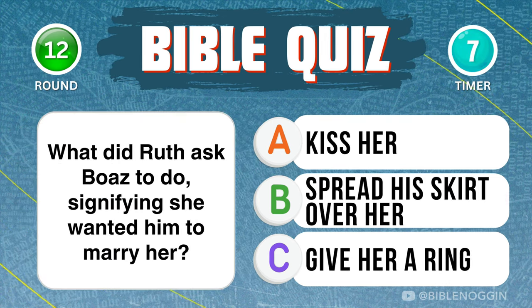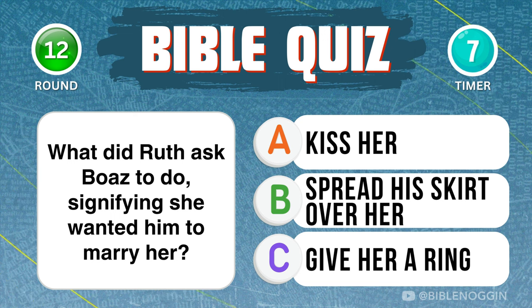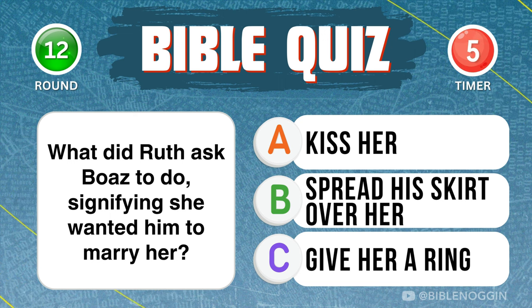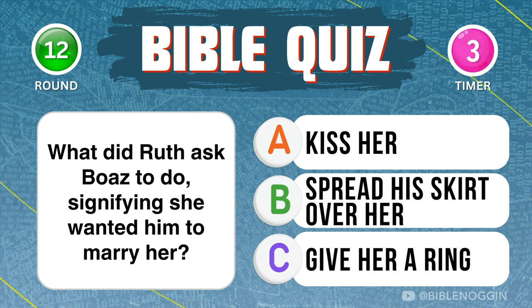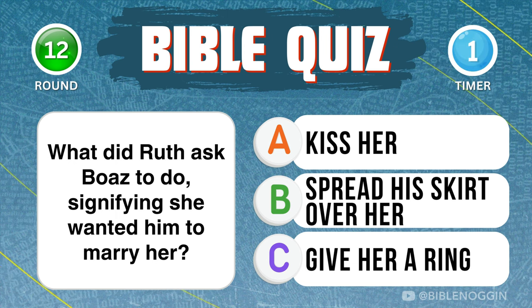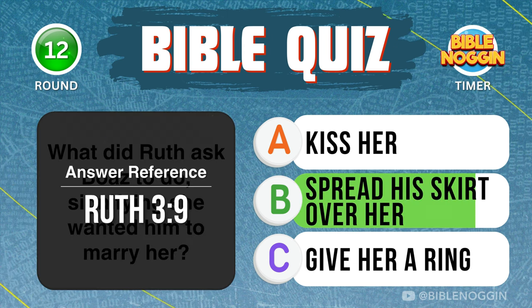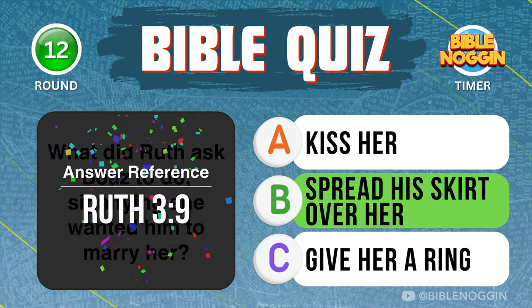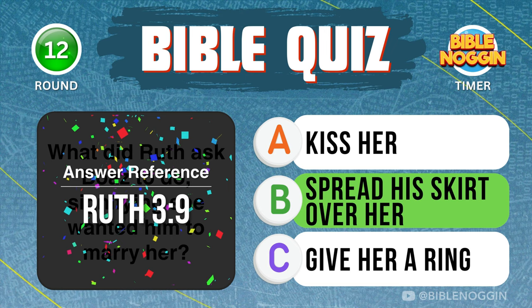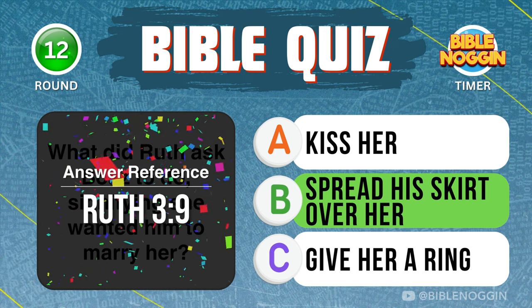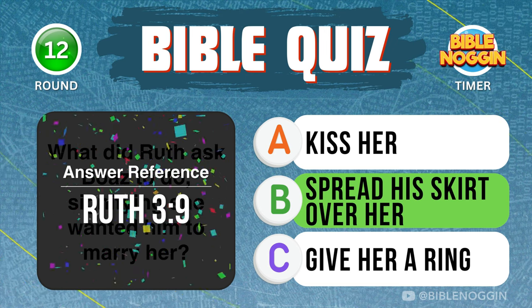Question 12: What did Ruth ask Boaz to do, signifying she wanted him to marry her? Spread his skirt over her — found in Ruth chapter 3, verse 9.